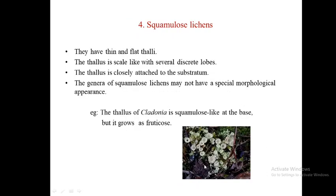Squamulose lichens have thin and flat thalli. The thallus is scale-like with several discrete lobes and is closely attached to the substratum. Squamulose lichens may not have a distinct special morphological category; for example, the thallus of Cladonia is squamulose at the base but grows as fruticose. These are the external morphology types of lichens. In the next part, we will discuss the economic importance of lichens.